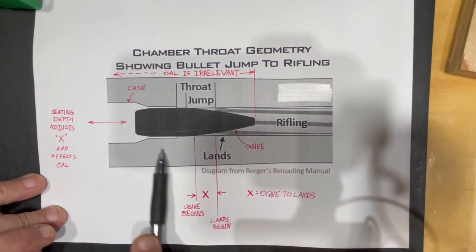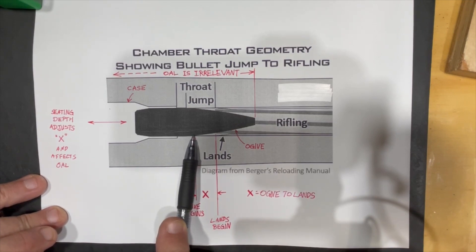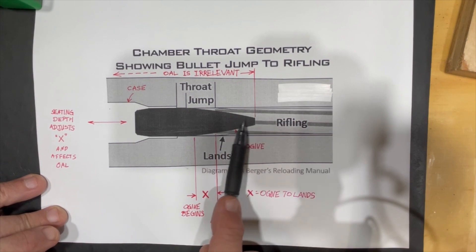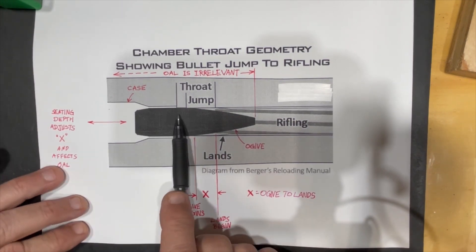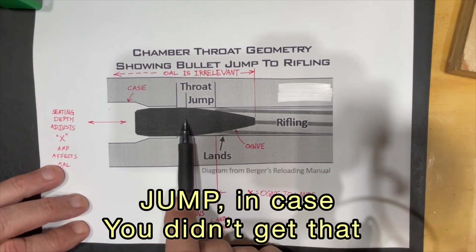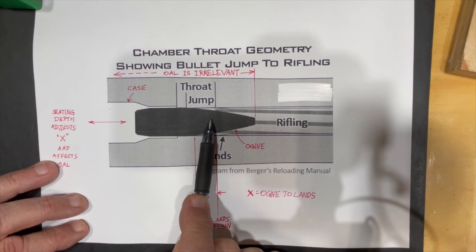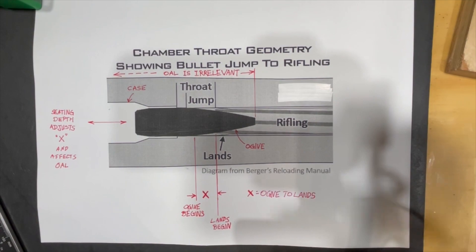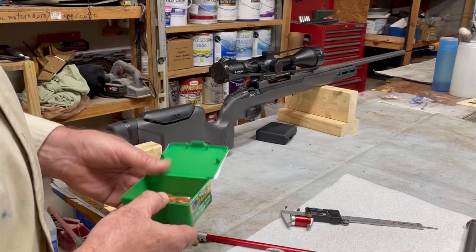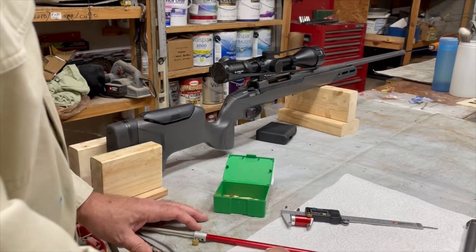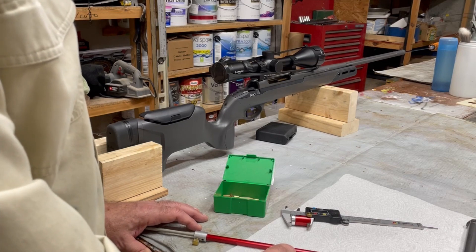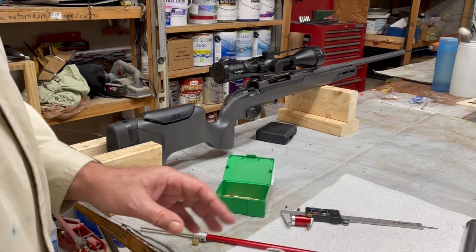So what we want to measure is the distance from where the ogive begins to where the lands begin, and it doesn't matter about the overall length of the bullet. That's what we call jump, is that distance here. How far does the bullet have to jump before it starts traveling down the barrel? Now what we want to do is adjust the seating depth to see if we can get those groups even tighter.